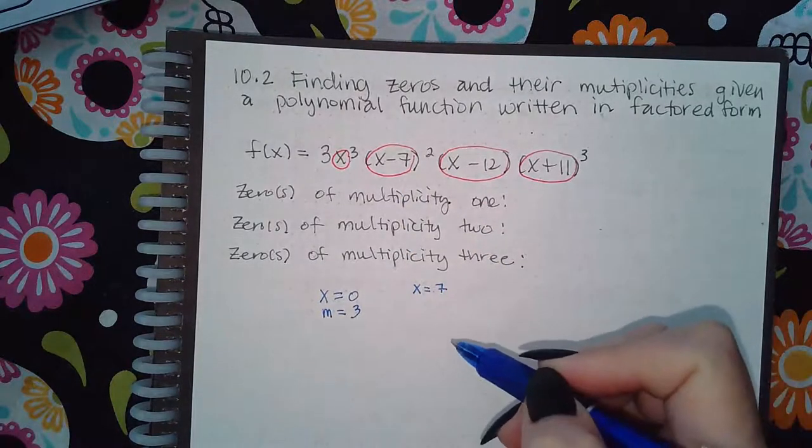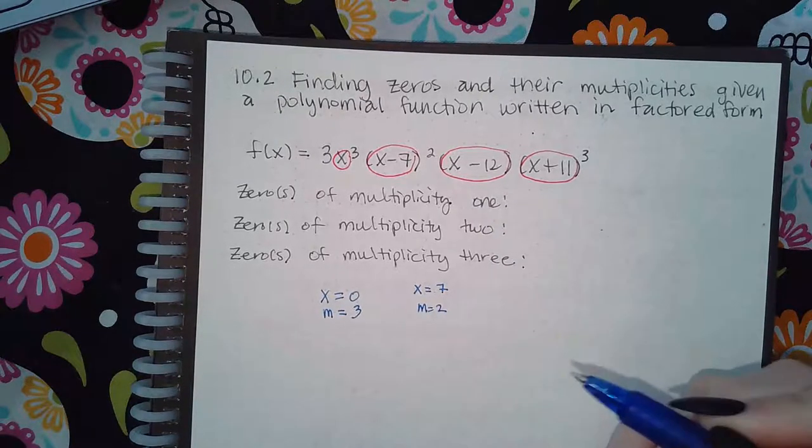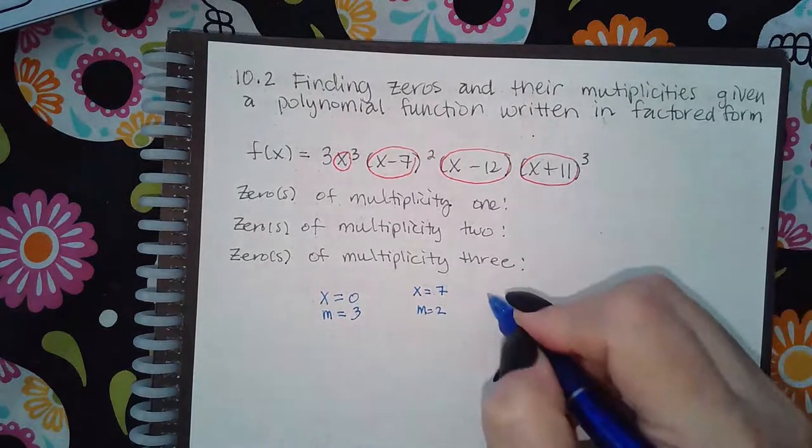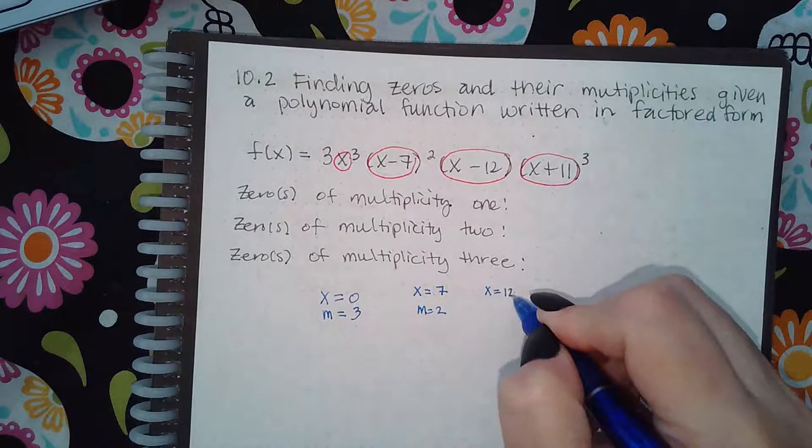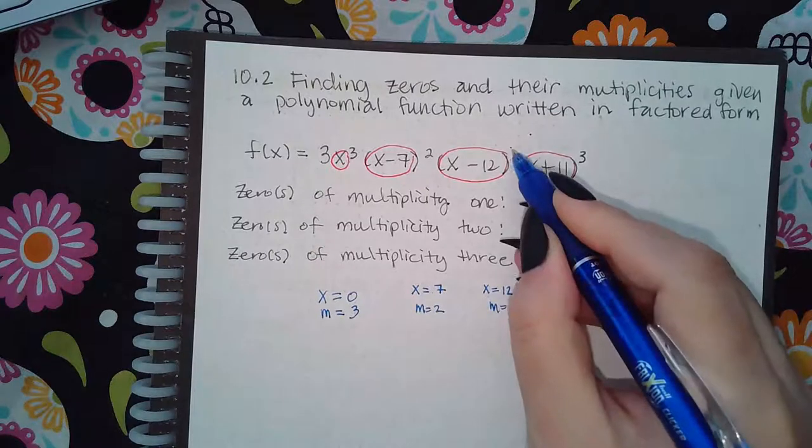Here, if I set this factor equal to zero, I'll get x equal to 12, and the multiplicity there is an invisible one. And the last one, if I set that one equal to zero, I will get negative 11.